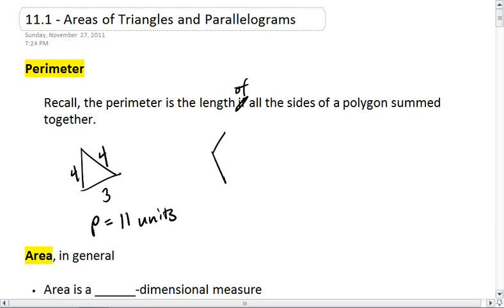If we have a pentagon, its perimeter is adding all the sides together, so we get 4 plus 4 plus 3 plus 3 plus 5, which gives us 8 plus 6 plus 5, which is 8 plus 11, which is 19.